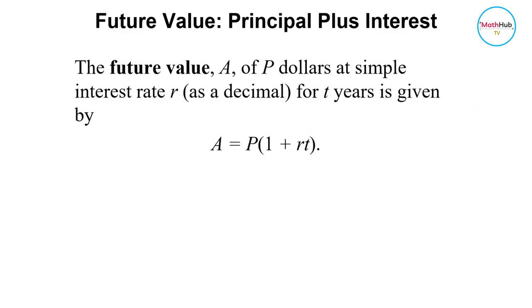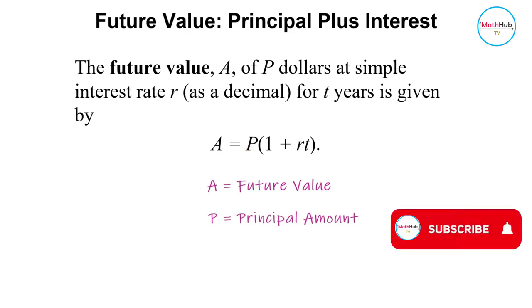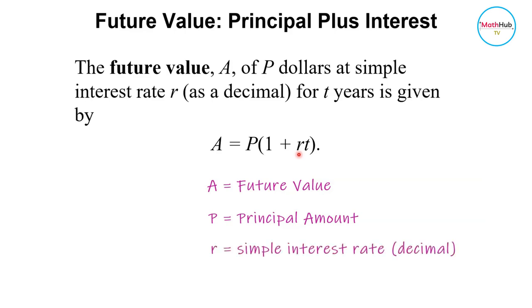Now let's talk about the future value. We denote the future value as A of P dollars. This is the principal amount at a simple interest rate R. And R here should be expressed in decimal. And T is the time in years.